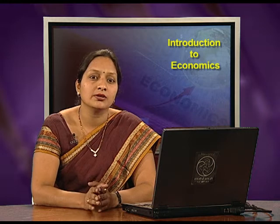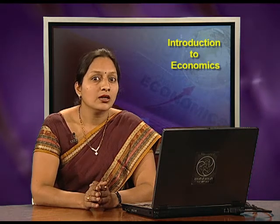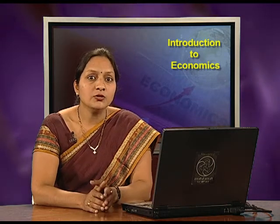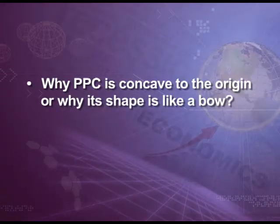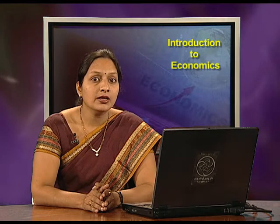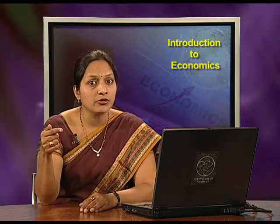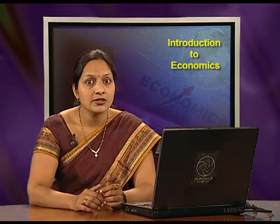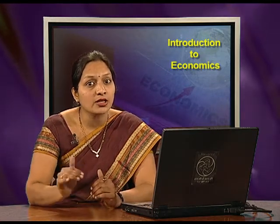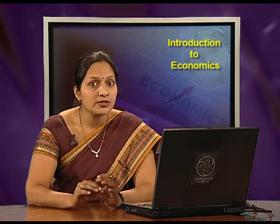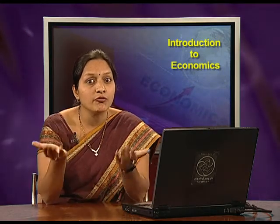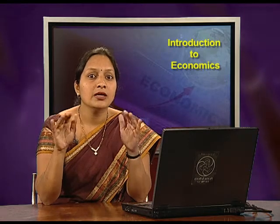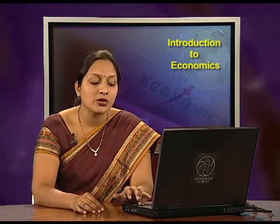Same is the case with PPC. Why is PPC concave to the origin — why does its shape resemble a bow? As we produce one additional unit of corn, our rate of sacrificing cotton goes on increasing — that is, our opportunity cost is increasing. Opportunity cost means the rate of sacrificing for one additional unit goes on increasing. That is why PPC becomes concave to the origin.